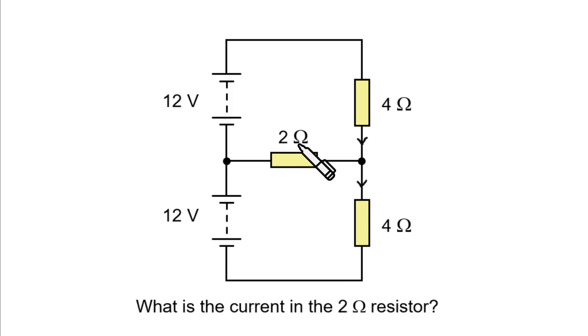Now, what about the currents through this 2 ohm? Do you think it's going to go this way because of this battery? Or do you think it's going to go this way because of this battery?